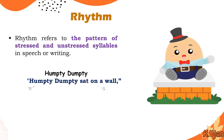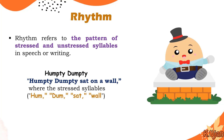In the line 'Humpty Dumpty sat on a wall,' the stressed syllables are 'HUM,' 'DUMP,' and 'WALL.' We put emphasis on 'HUM' and 'DUMP' while de-stressing the other parts — the 'ty' endings. Similarly, 'sat' is stressed, and 'on' and 'a' are unstressed, with stress falling on 'wall.'